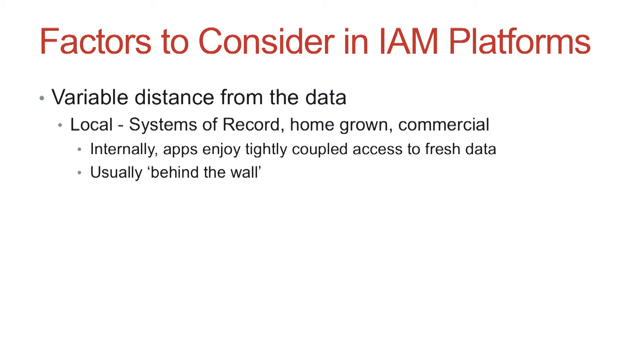There are many possibilities to consider when building an identity management system. One possibility is to have the system be purely local, relying on only a few local systems for authoritative information. These local systems may be built on site, often known as homegrown or built-here environments. Alternatively, commercial products may be leased or purchased and configured as per the needs of the campus.